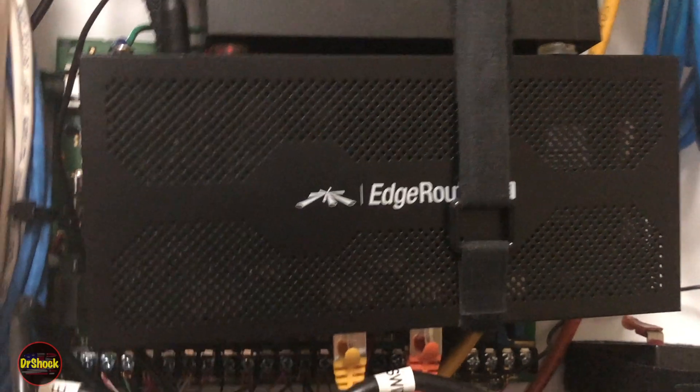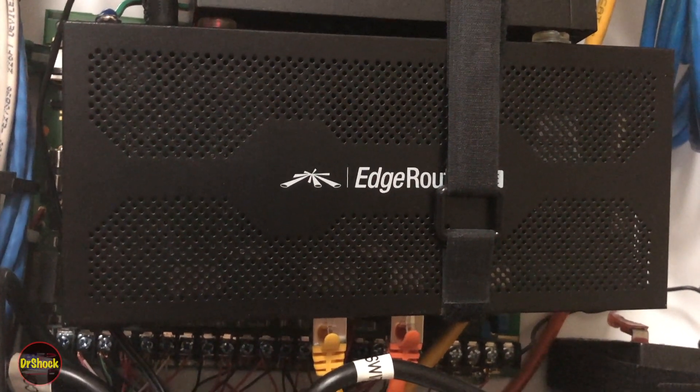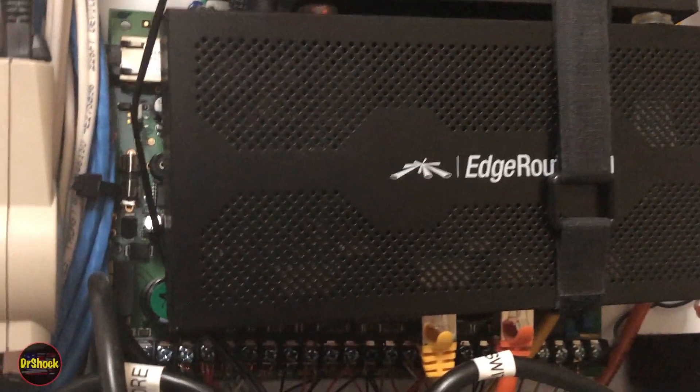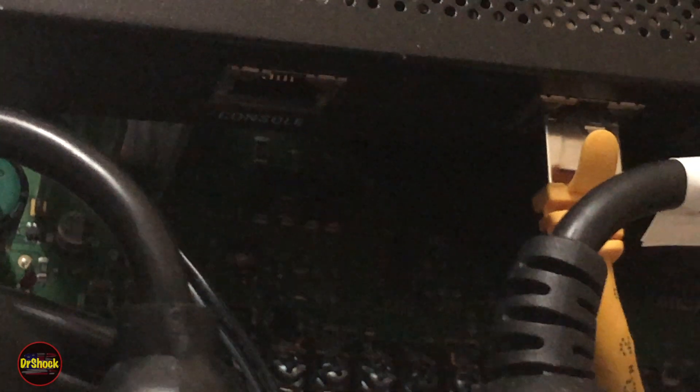Alright guys, in today's video we're going to be working on a problem with this Ubiquiti Networks EdgeRouter X Lite router. If you've got this kind of problem where the whole network is down and the power light here is just blinking a steady green, I'm going to show you how to fix that. It's not a bad repair.